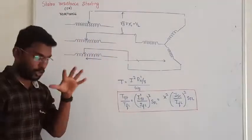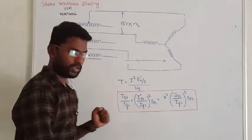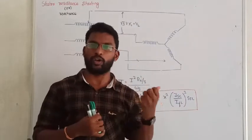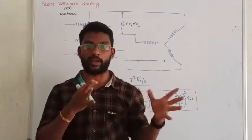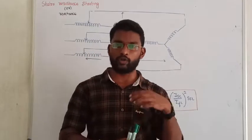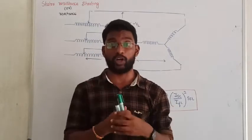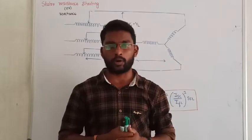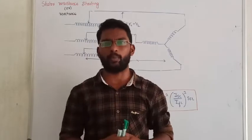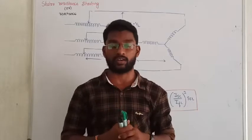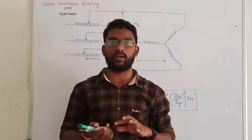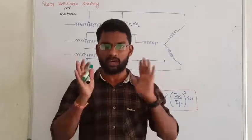We are going to discuss the Reduced Voltage Method. In the last lecture, we applied full voltage using direct online starting with a squirrel cage motor. Now, if we are willing to reduce the starting current, the direct online starting method does not limit the starting current.